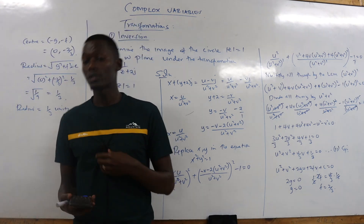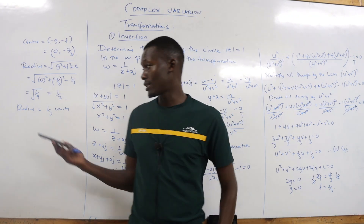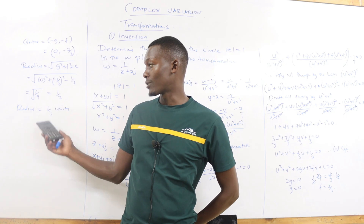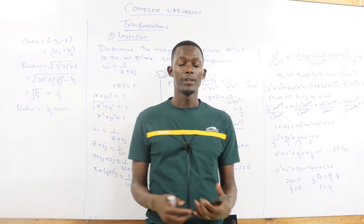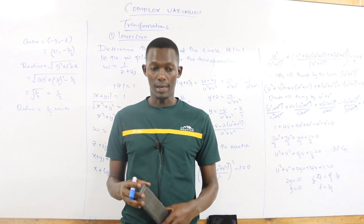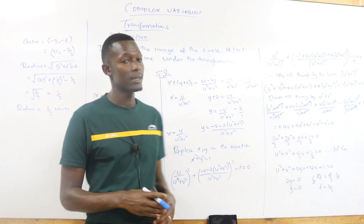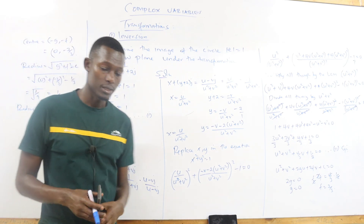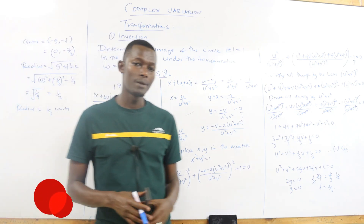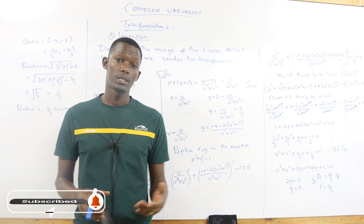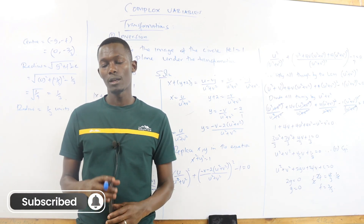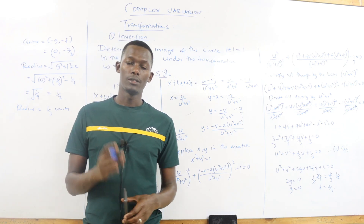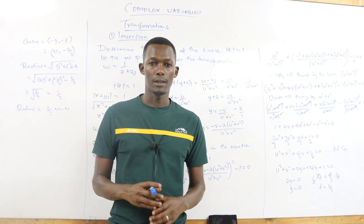The radius is a distance and a scalar quantity, so it does not have a negative value. The value you get must always be expressed as positive. That is how you find inversions in complex variables. Thank you — if you have not subscribed, kindly subscribe, share, and comment so that we may learn and benefit from this lesson together. See you in the next lesson.